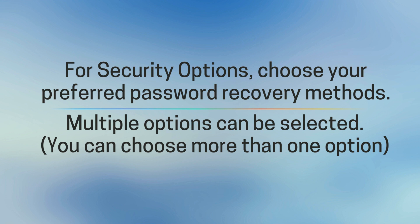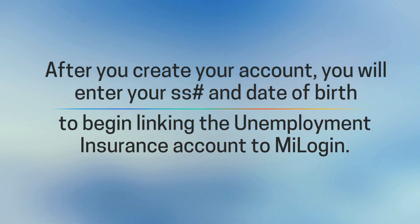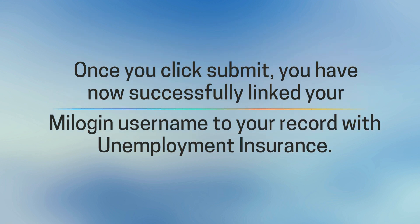Multiple options can be selected. After you create your account, you will enter your social security number and date of birth to begin linking the unemployment insurance account to MyLogin. Once you click 'Submit,' you have now successfully linked your MyLogin username to your record with unemployment insurance.